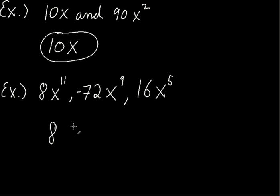We have x to the 11th, x to the 9th, and x to the 5th. What's the greatest common factor out of the x's? I would say it's x to the 5th. So that is the greatest common factor between those three monomials.